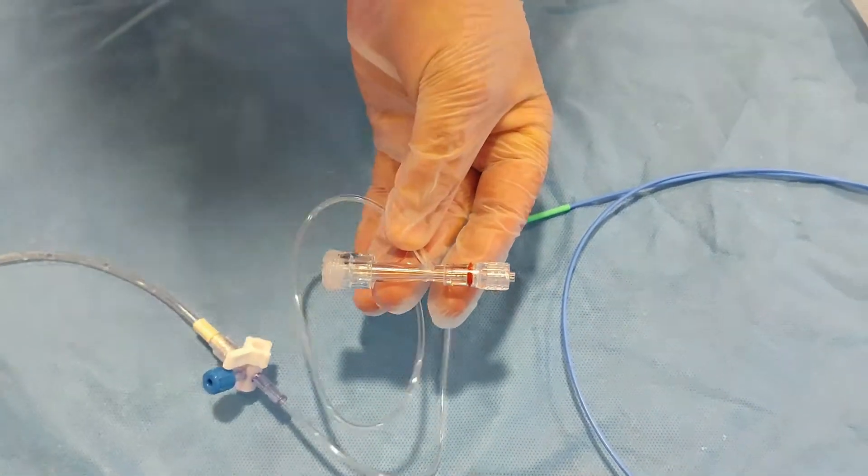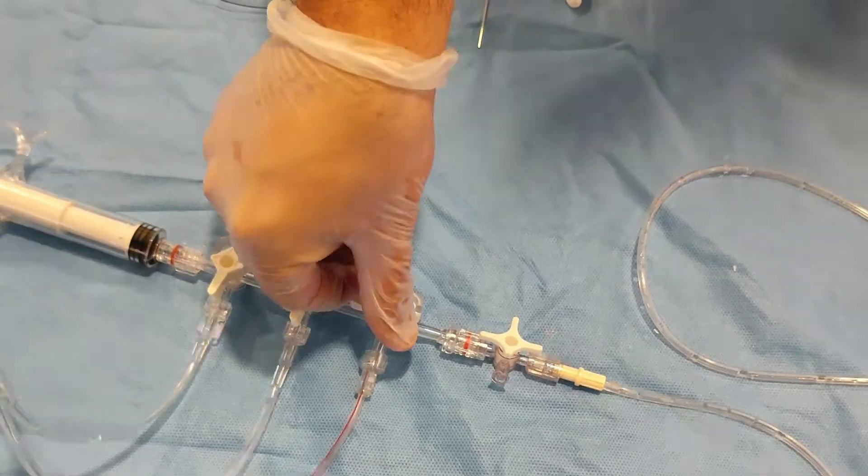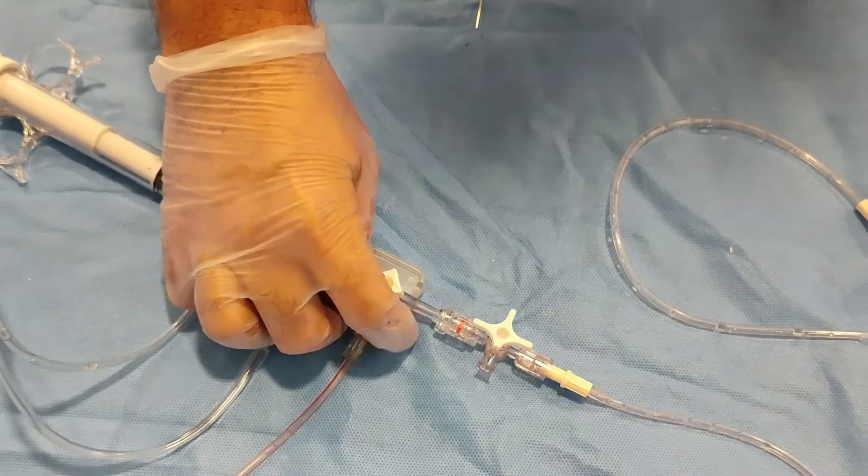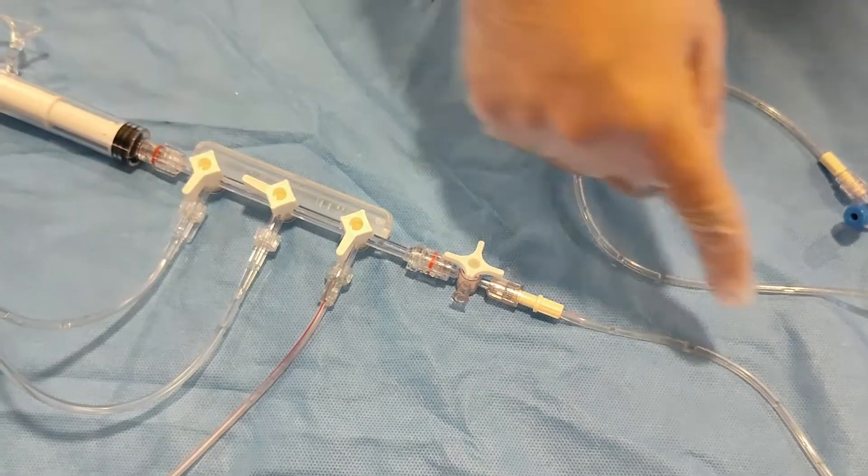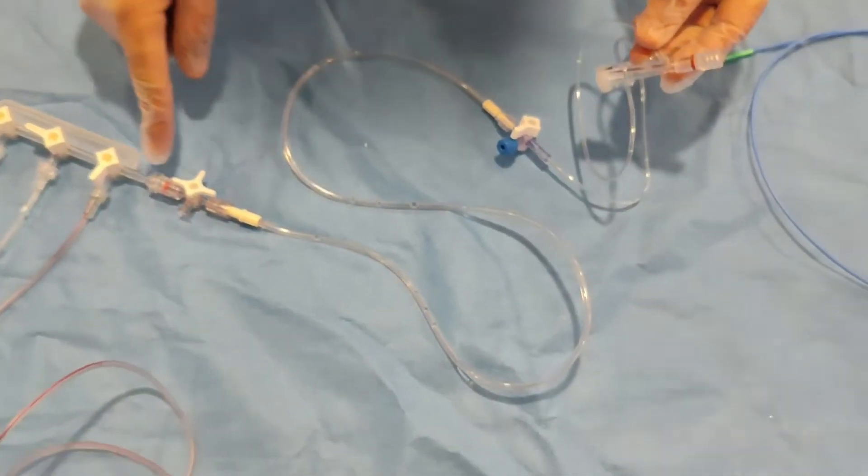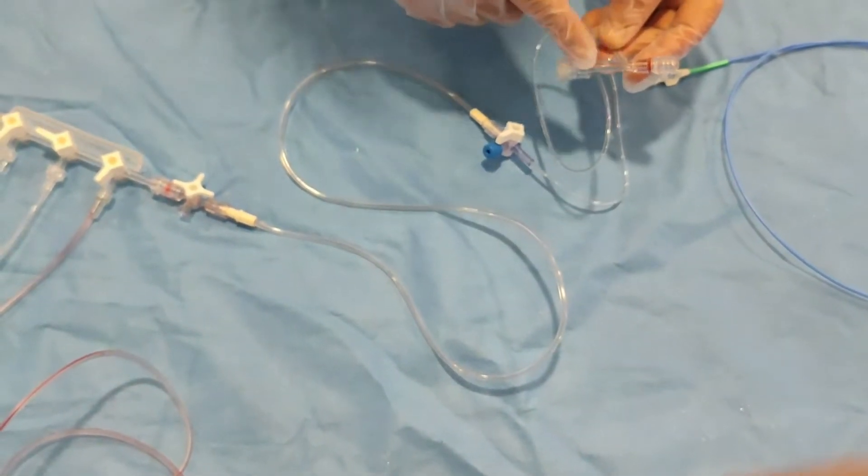Once you open it, now the question is how to make it air-free. It's very easy, come back here. As we mentioned in the last video, just turn this one off towards the pressure side. This is a pressurized saline bag. Just open it towards the patient.